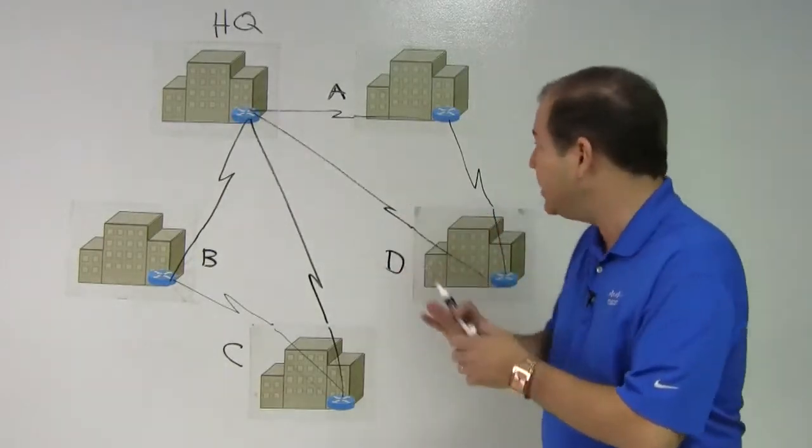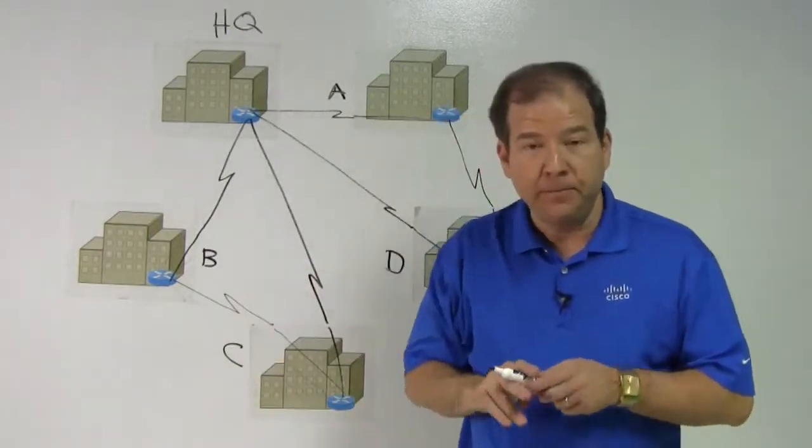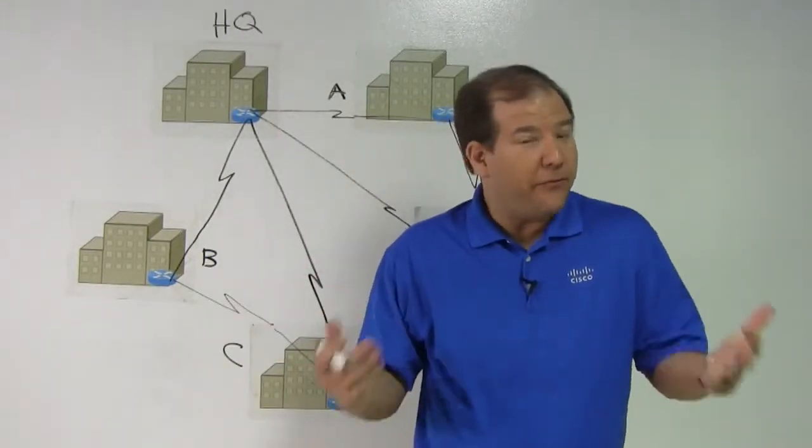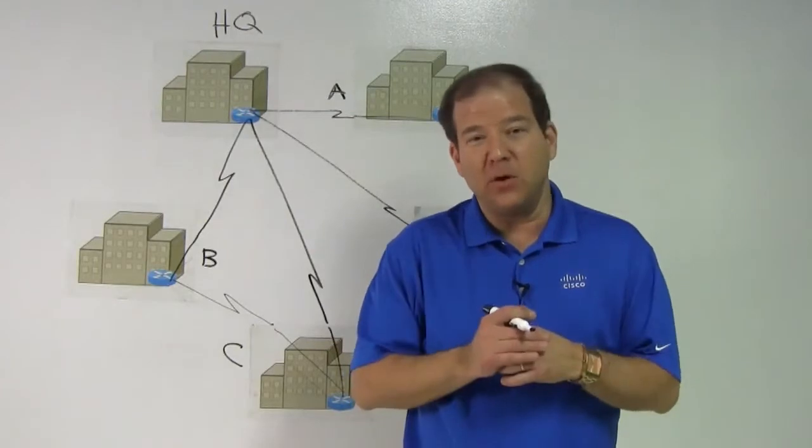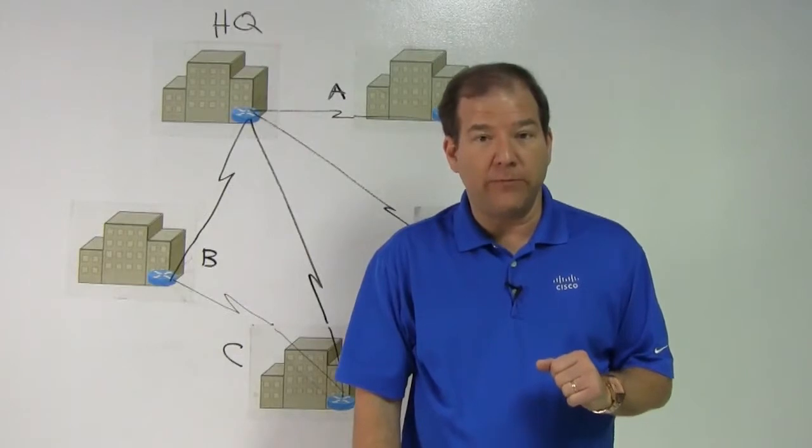Now notice, at this point we have one, two, three, four, five, six links. We've got more than the four that would be required for a hub and spoke topology, but far less than the ten that would be required for a full mesh.